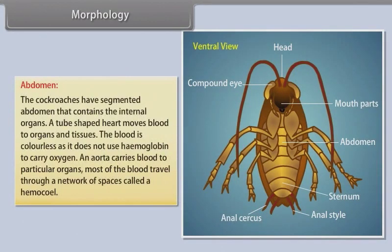Abdomen. The cockroach has a segmented abdomen that contains the internal organs. A tube-shaped heart moves blood to organs and tissues. The blood is colorless as it does not use hemoglobin to carry oxygen. An aorta carries blood to particular organs. Most of the blood travels through a network of spaces called a haemocoel.